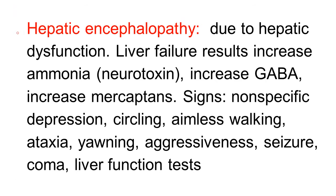Another differential diagnosis is hepatic encephalopathy — encephalopathy due to hepatic dysfunction. When there is hepatic dysfunction, it results in increased ammonia, which is neurotoxic; increased GABA, which is also toxic to the nervous system; and increased mercaptans, also neurotoxic. This causes non-specific depression, circling, aimless walking, ataxia, yawning, aggression, seizures, and coma. It is confirmed by liver function tests.